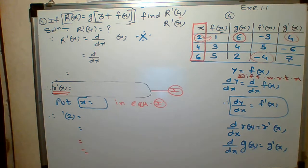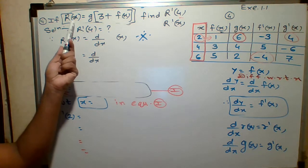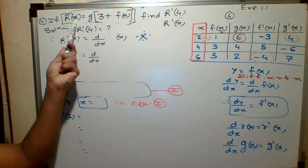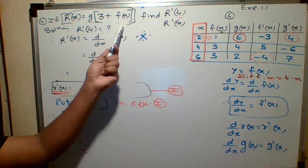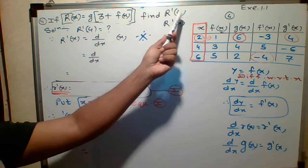What's the next question? Next question is what if R of X? Capital R of X is given by G of 3 plus F of X. Okay, question is what? Find R dash of 4.